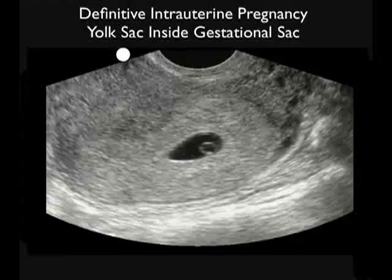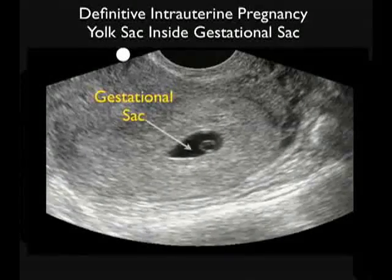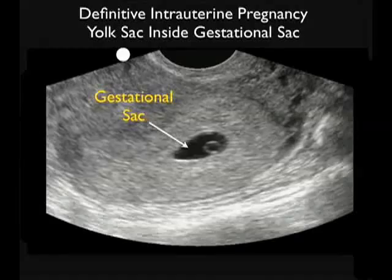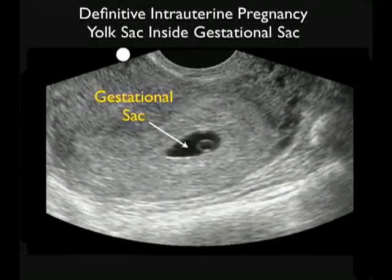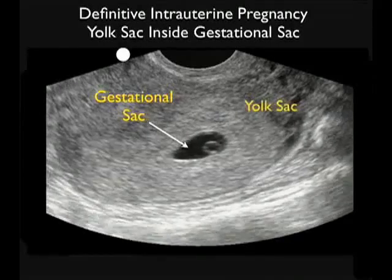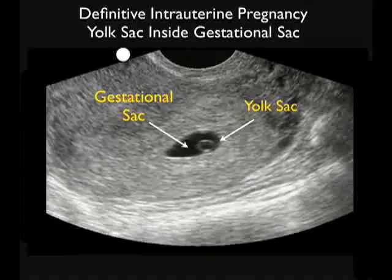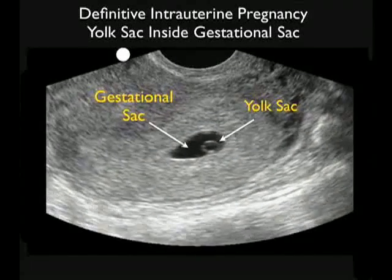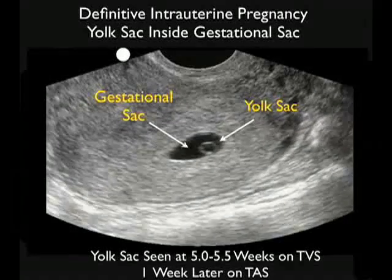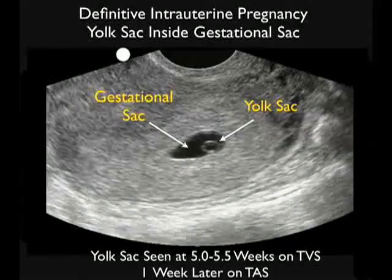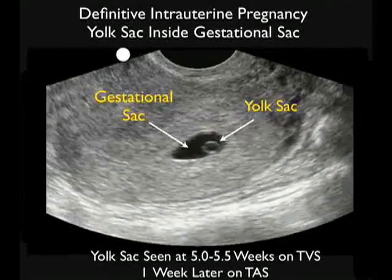Here's a video clip showing a definitive intrauterine pregnancy. We see a larger gestational sac, and inside we see the positive yolk sac or cheerio sign towards the inferior aspect of the gestational sac. This is diagnostic of an intrauterine pregnancy, effectively ruling out ectopic pregnancy in the vast majority of patients. The yolk sac is seen at about 5 to 5.5 weeks on transvaginal sonography and about a week later on transabdominal sonography.